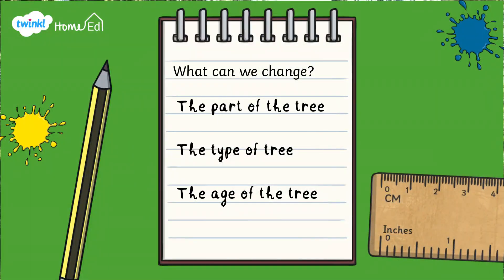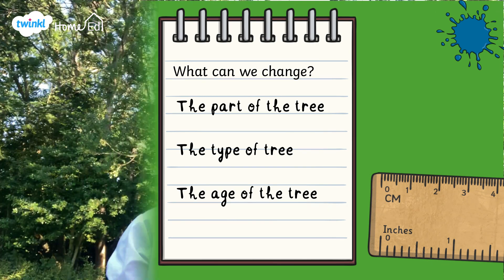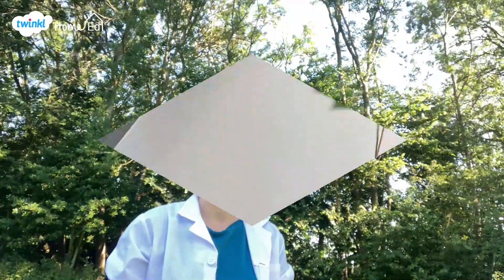Today with the trees we're going to look at these different things that could change. We could change the parts of the tree we're looking at, the type of tree, or the age of the tree, and then make observations of all of those different things. It's always good to only change one thing, so we're going to start by looking at the parts of the tree and see if we can make some good observations about it.